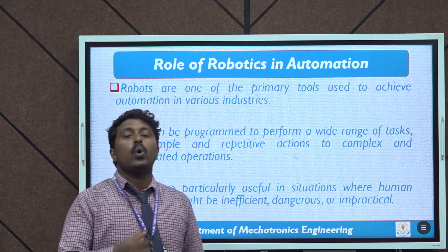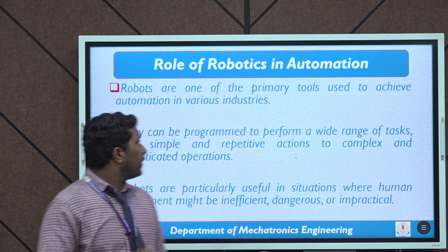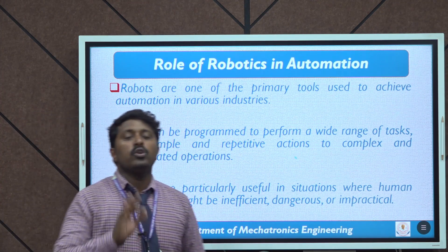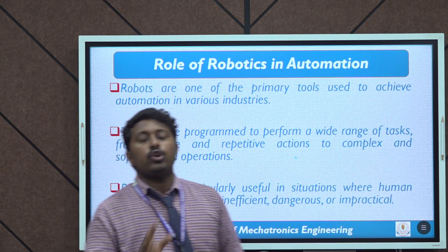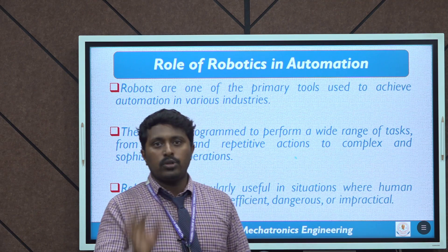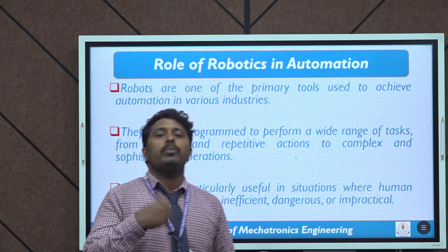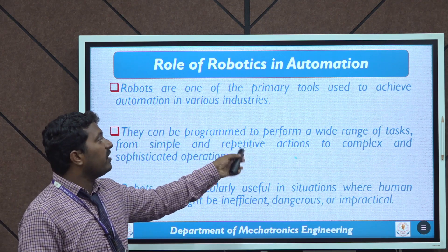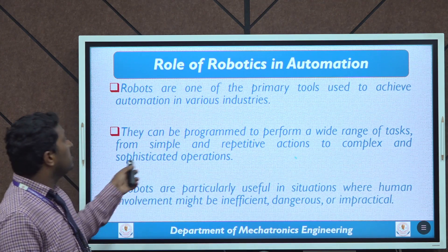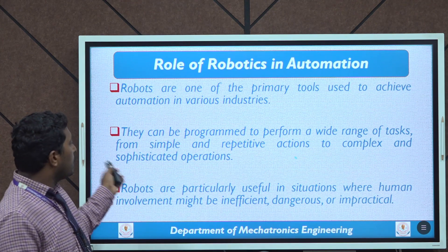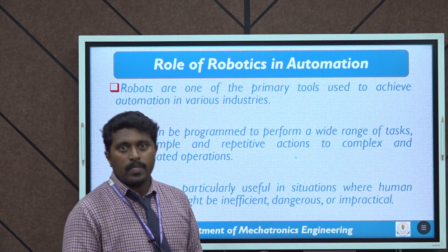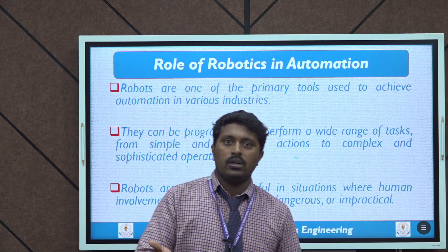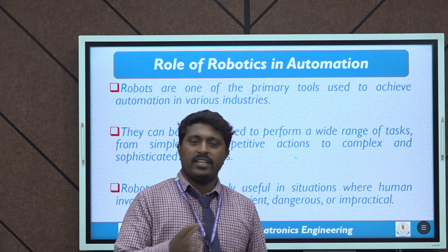What is the role of robotics in automation? Robots are one of the primary tools used to achieve automation in various industries. Industrial robots are the main components to automate any manual process. They can be programmed to perform a wide range of tasks, from simple and repetitive actions to complex and sophisticated operations, like pick and place, loading, painting, assembly, and inspection.